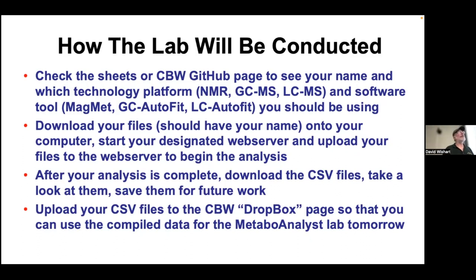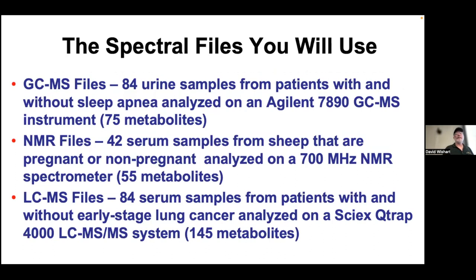Maybe find some biomarkers, maybe discover something new. For the GCMS files, there are 84 urine samples from patients in a study on sleep apnea — some people had sleep apnea, some didn't. There is a difference in their metabolomes. This was analyzed on an Agilent 7890 GCMS on the eighth floor, which measures about 70-75 metabolites.